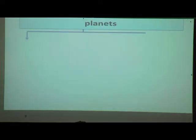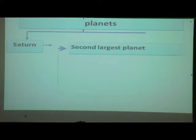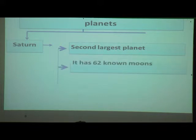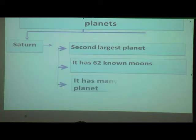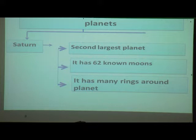Now we will see about Saturn. It is the second largest planet in the solar system. It has 62 known moons and many rings around the planet.